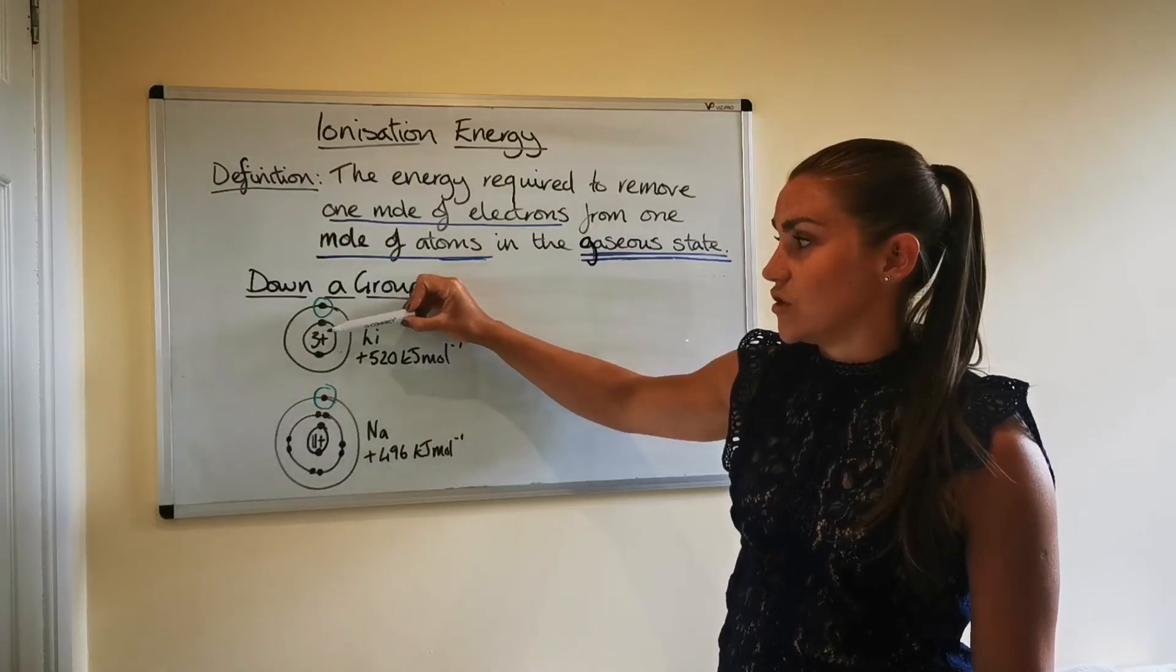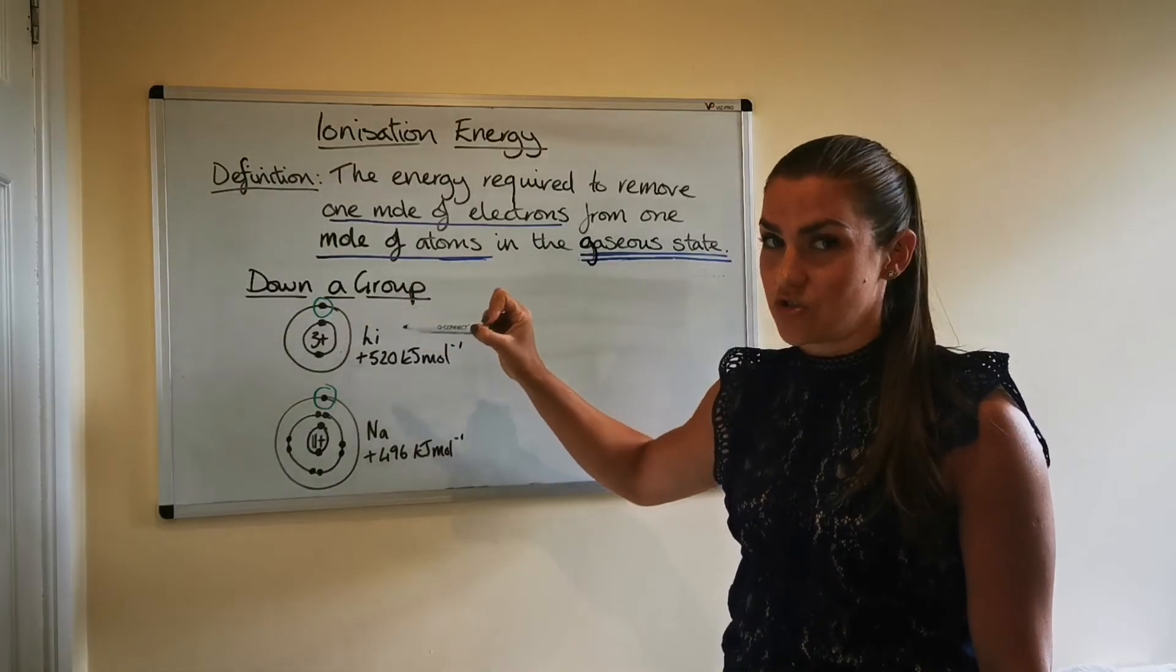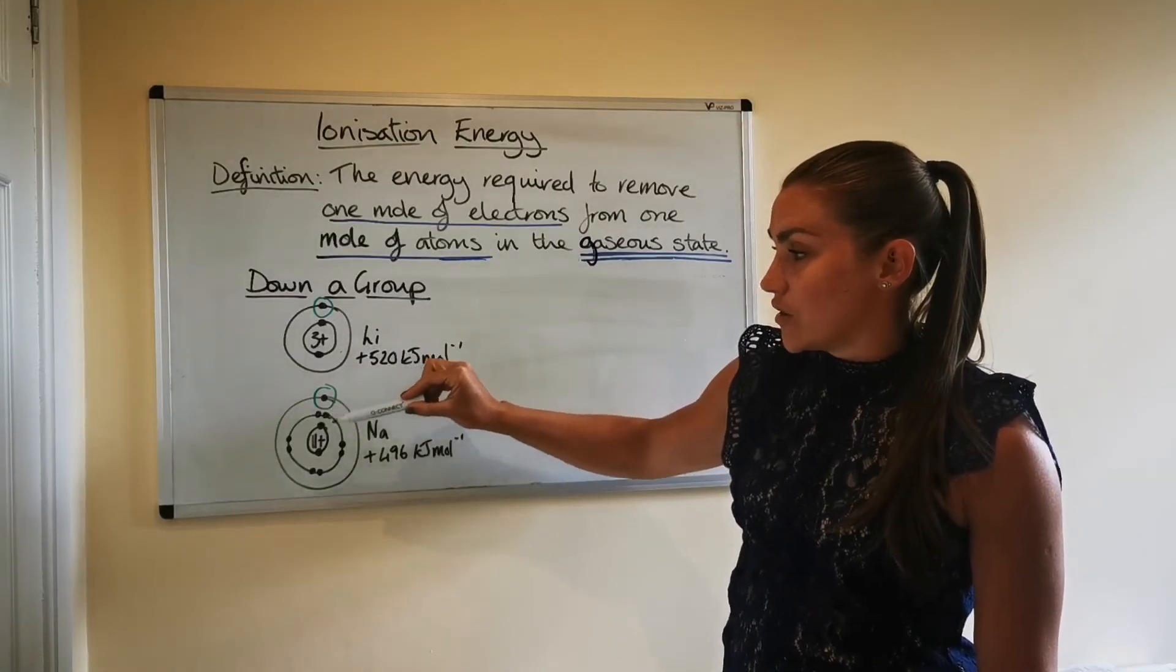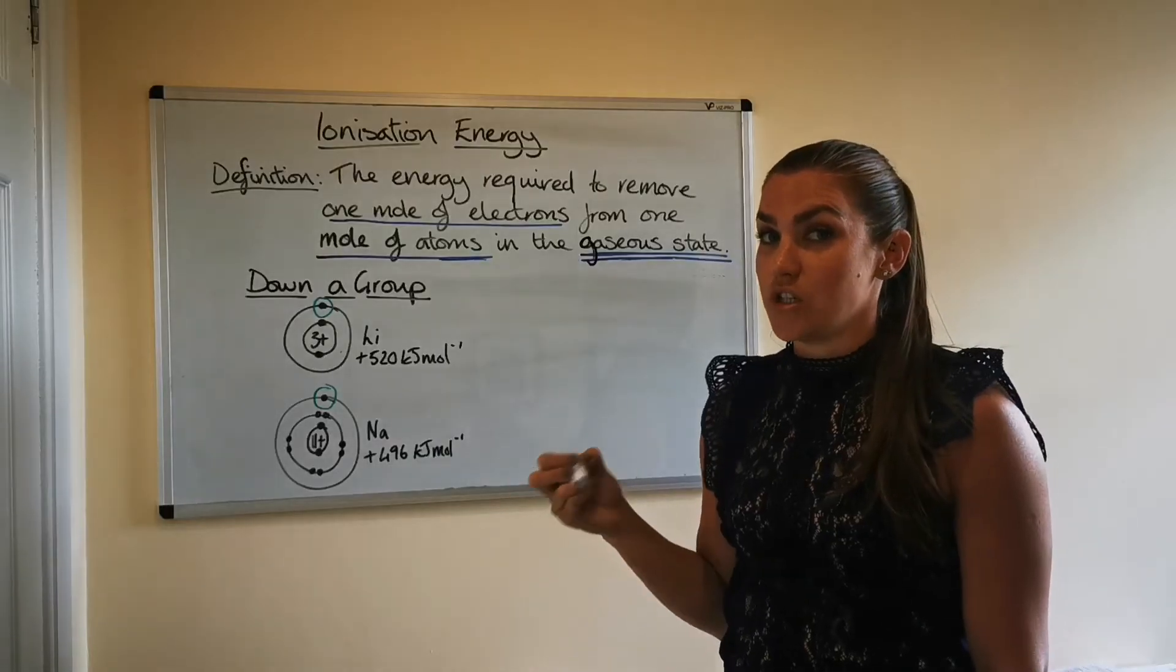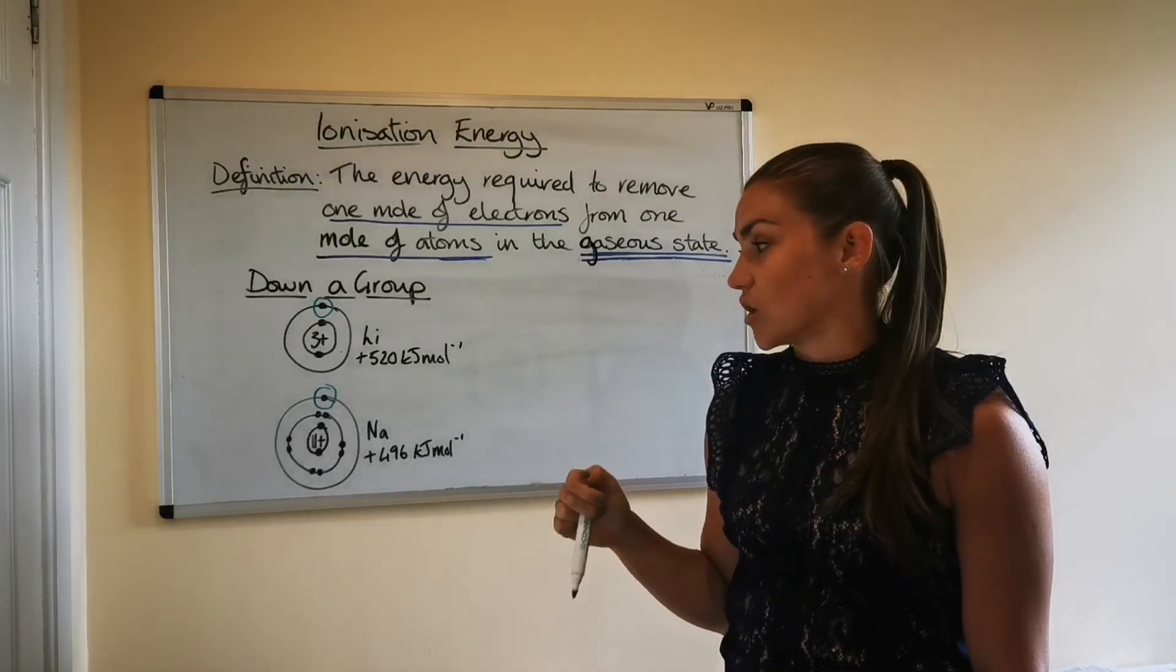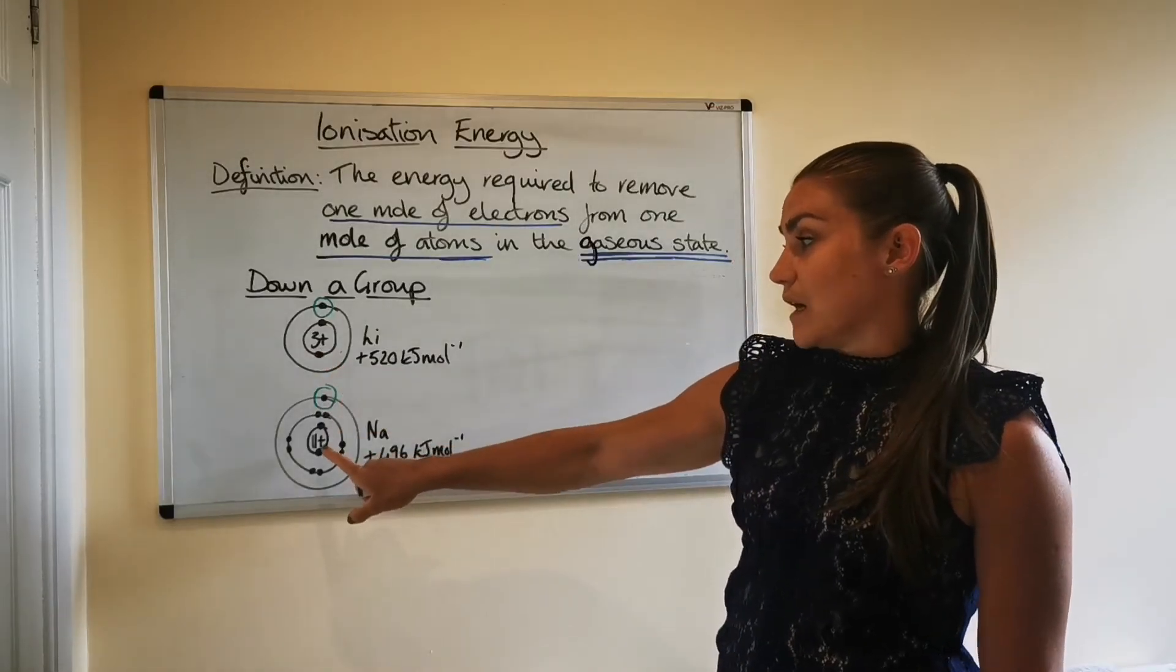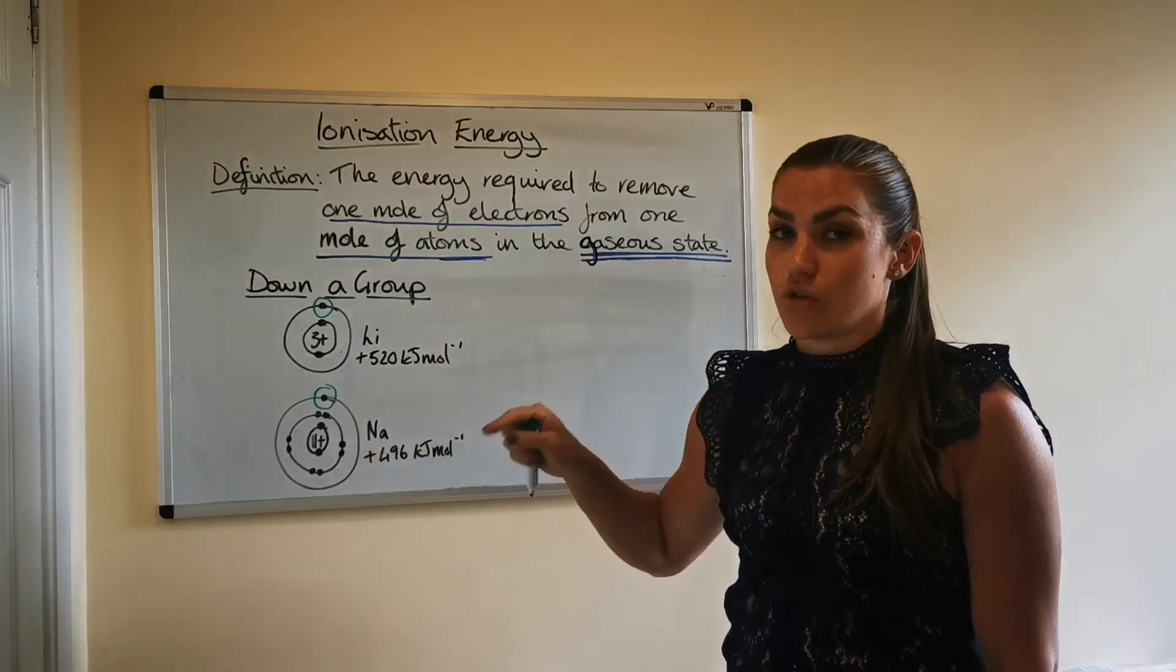The nuclear charge that these outer electrons experience is shielded by the inner ones. So there's negative charges in the middle here, shielding that positive charge that they're actually attracted to. So the more inner shells of electrons you have, the more of a shielding effect you'll get.